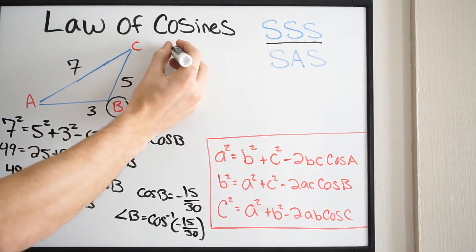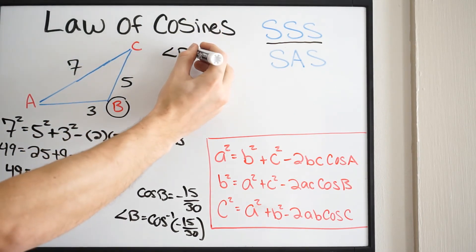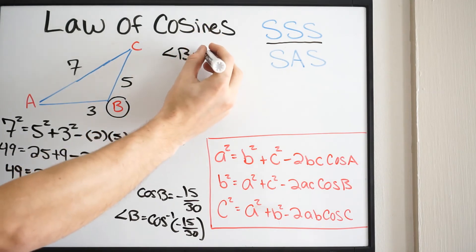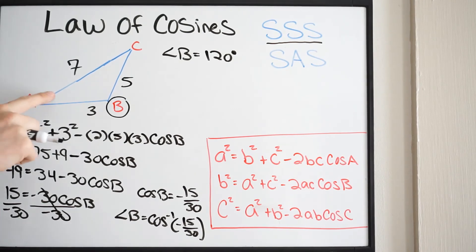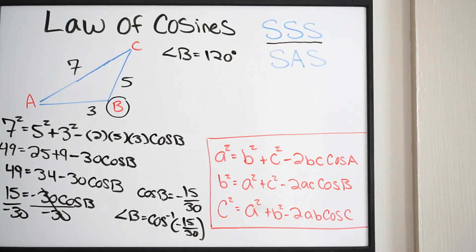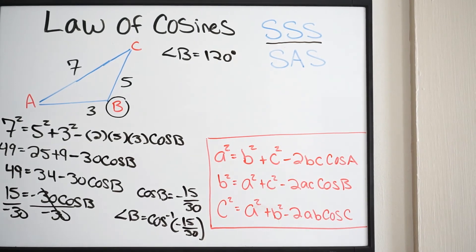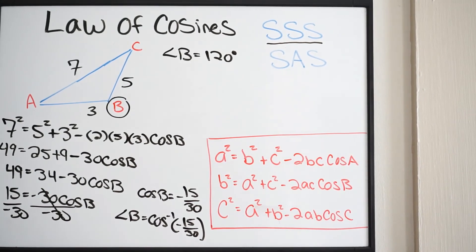So angle B is equal to 120 degrees. Now, since I picked the largest angle, I can solve the rest of this problem using the law of sines. However, if you did not pick the largest angle — let's say you picked angle A first — you would have to continue on this problem using the law of cosines. But since we picked the largest angle first, we're able to now use the law of sines.